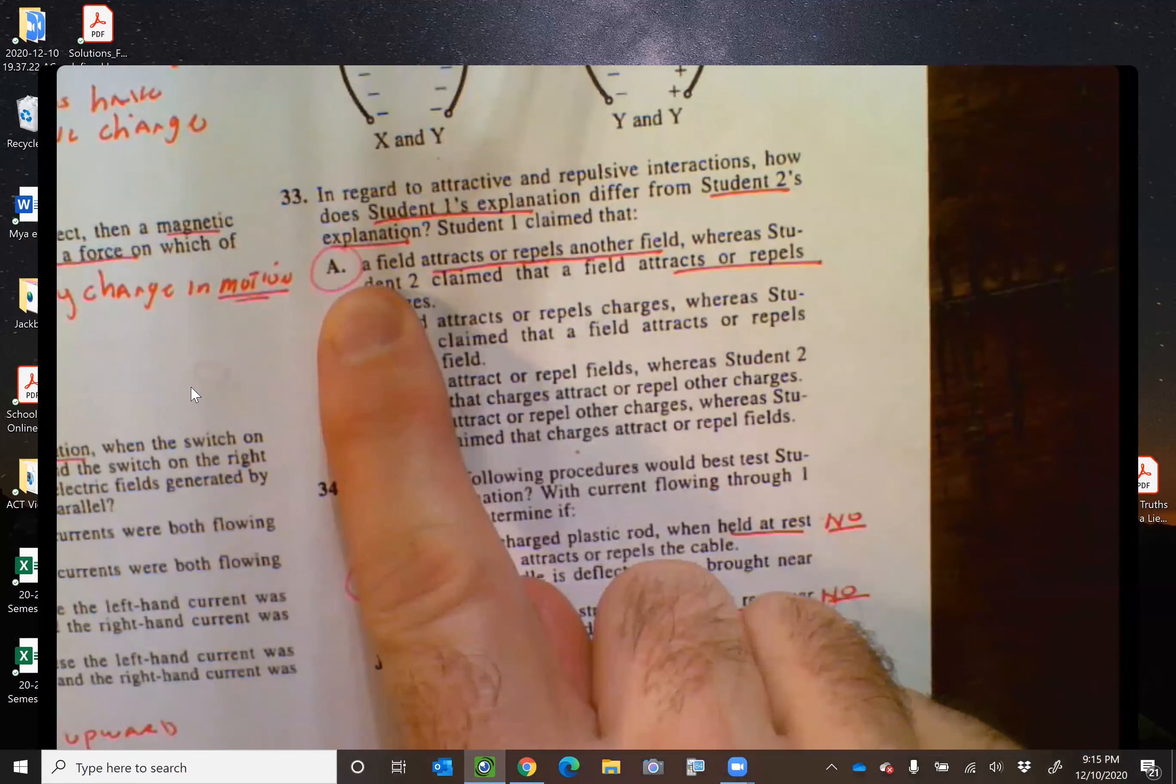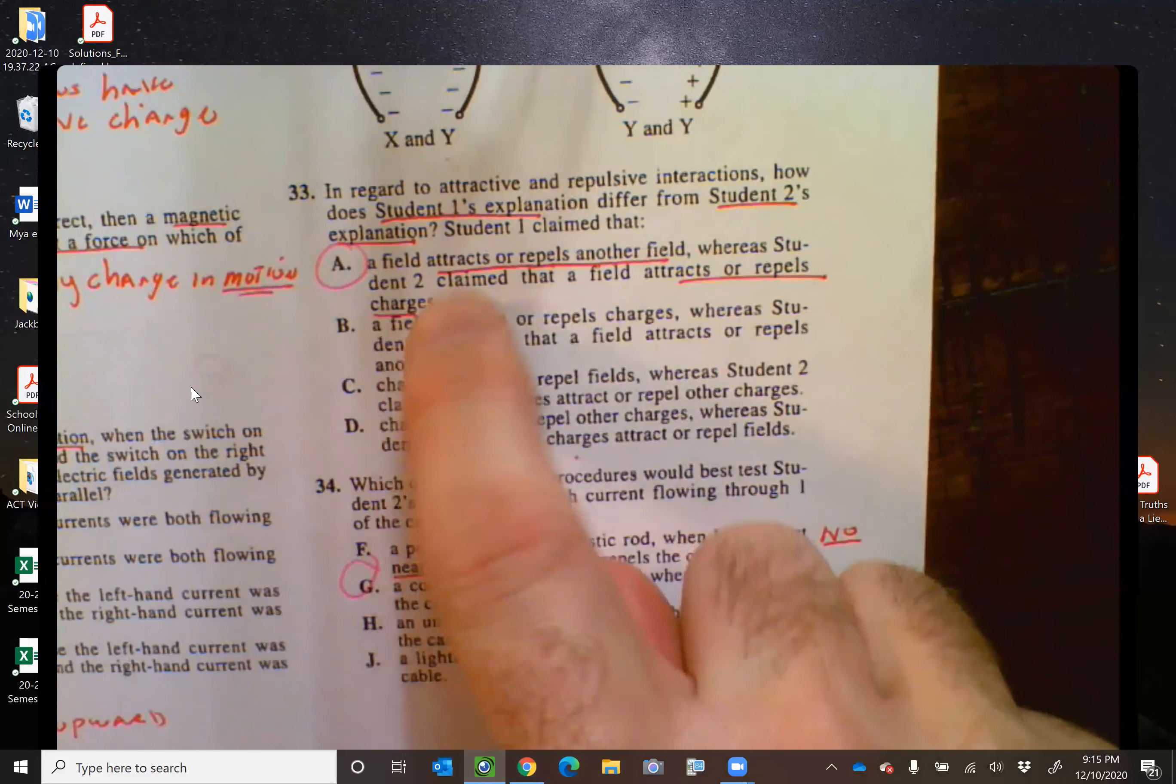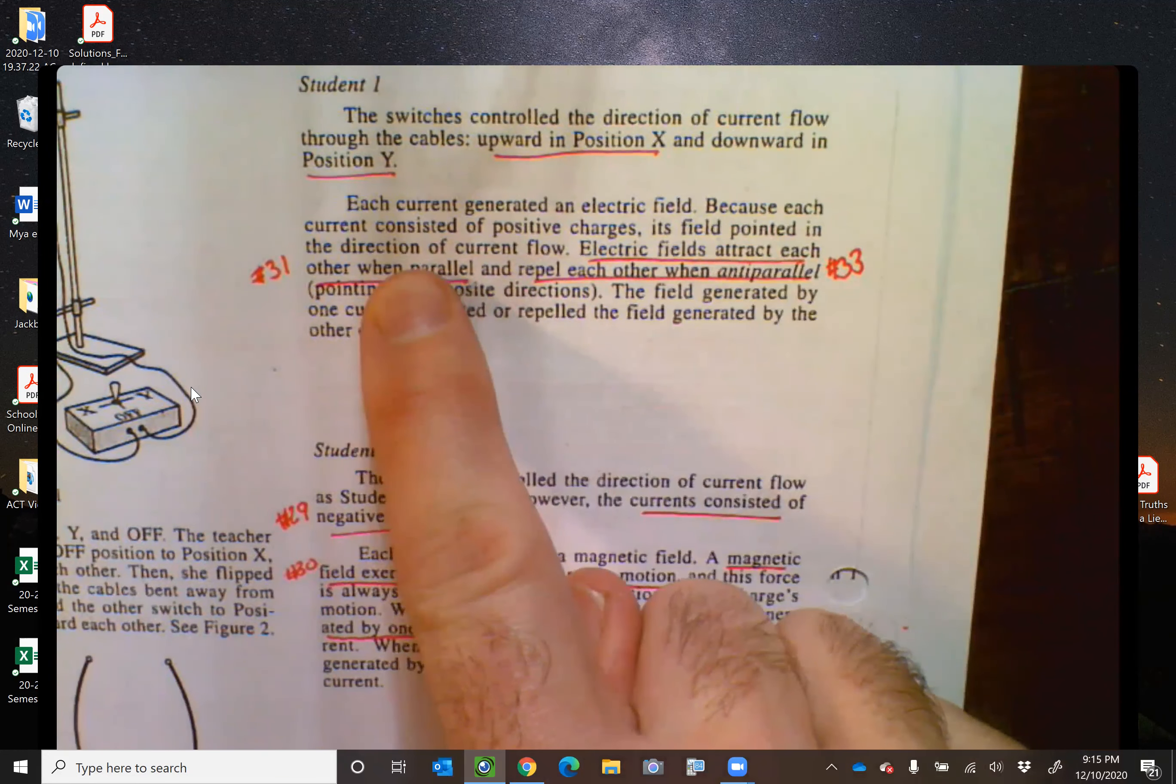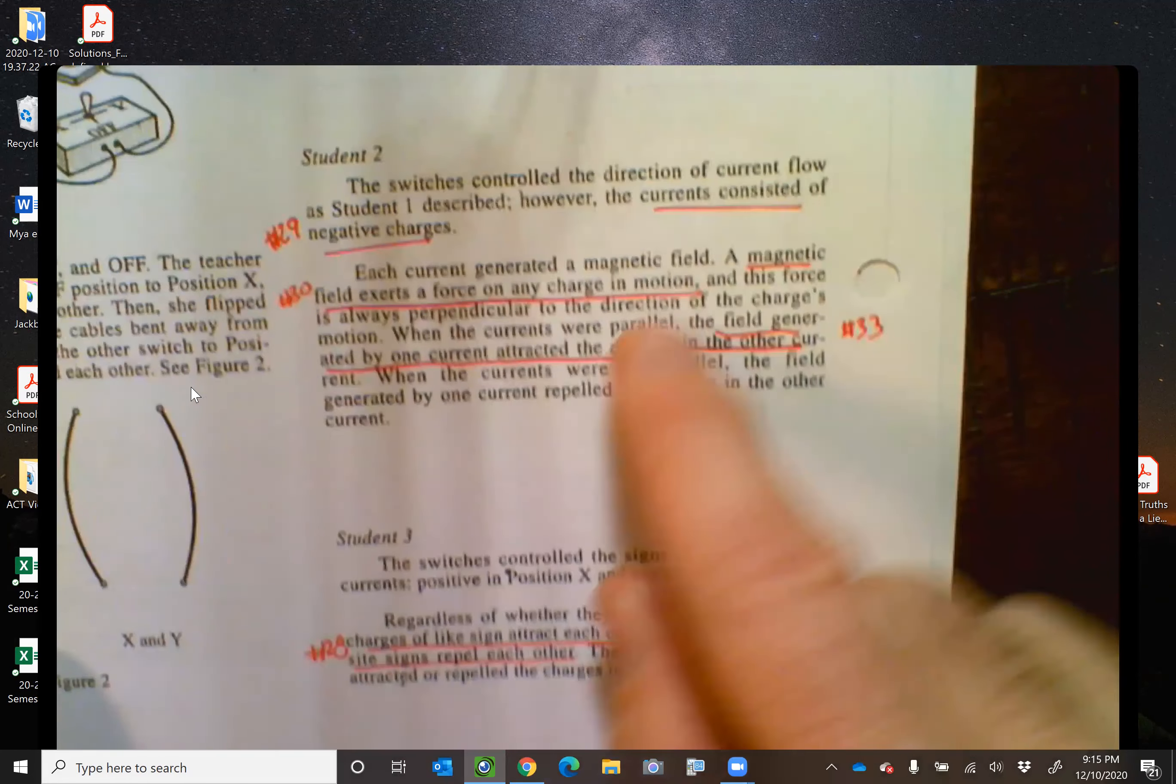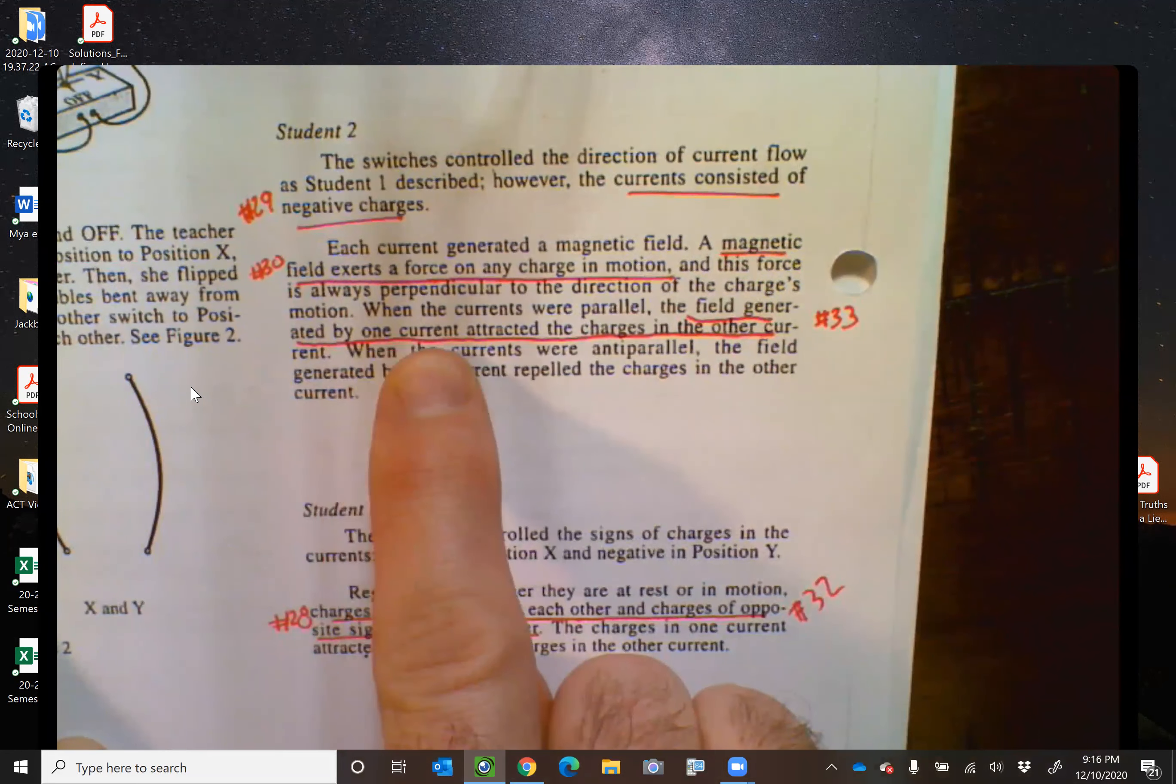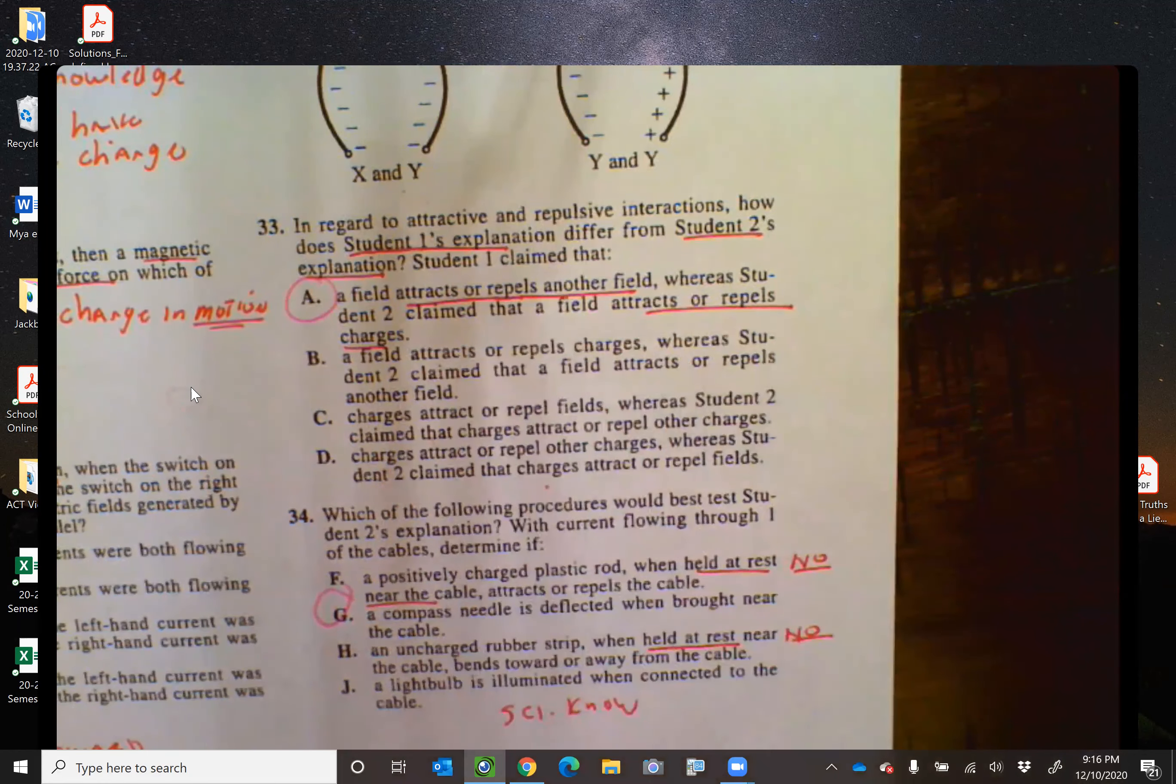33, answer should be letter A, right? What's different between student one and student two? Well, a field attracts or repels another field, whereas in student two, a field attracts or repels charges. Now, the way to see that, it should be in the same location of the paragraph. Like if I look at student one, it says right here, electric fields attract each other. So fields attract fields. So that's why I went with this first part. Now, student two, if I look in the same part here, it says a magnetic field exerts a force on any charge of motion. And later on, a field generated by one current attracted the charges of another current. So here it's saying a field attracts a current or a charge. And that's what that second part is. And that's why it's letter A.